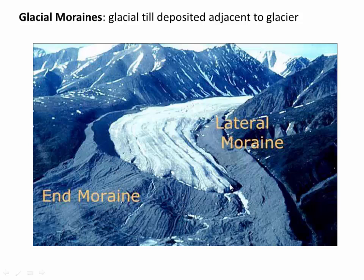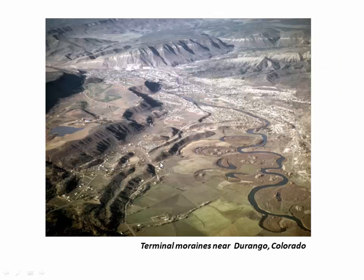We've also got the end moraine down here and the modern river drainage coming out of the glacier tongue, carrying meltwater through the debris field. Here's an example from Durango, Colorado showing moraines long after the ice is gone — a nice river and a whole series of glacial moraines representing two specific glacial advances when the ice sheet pushed down, piled up material, and then retreated back.